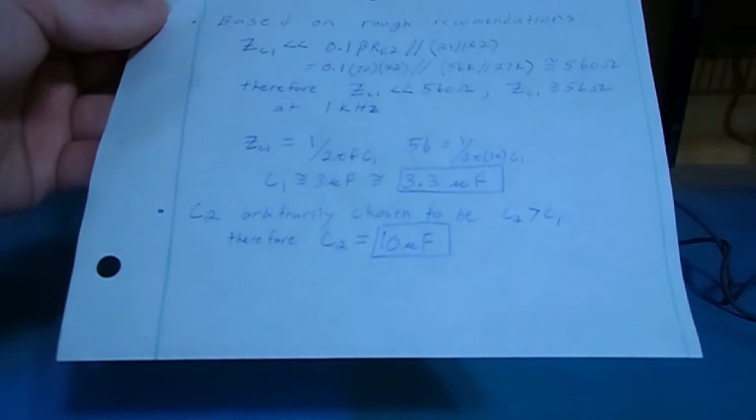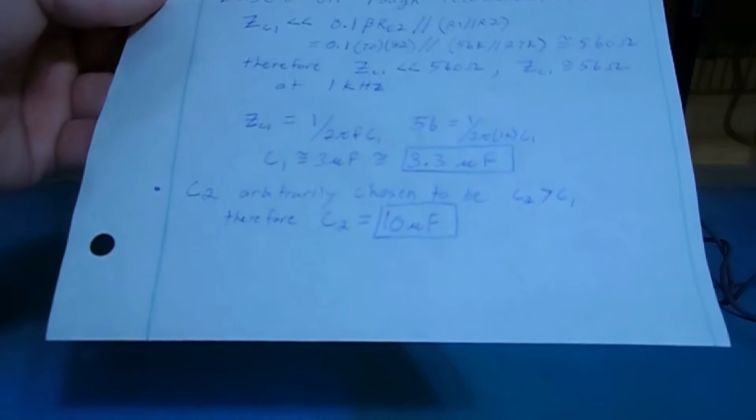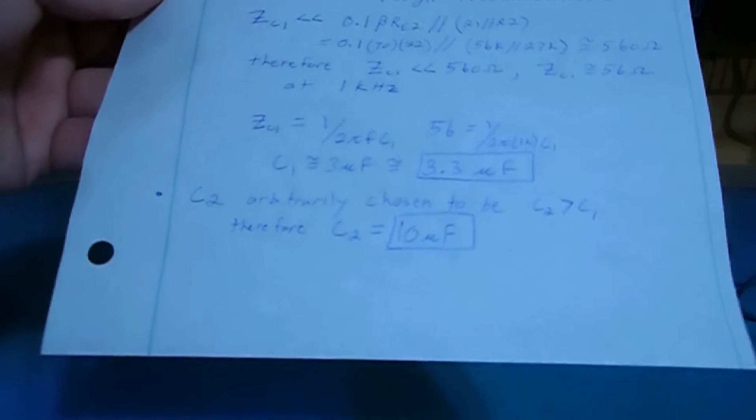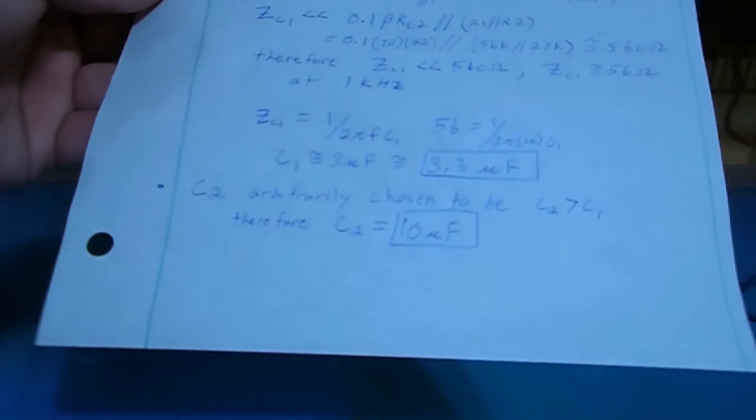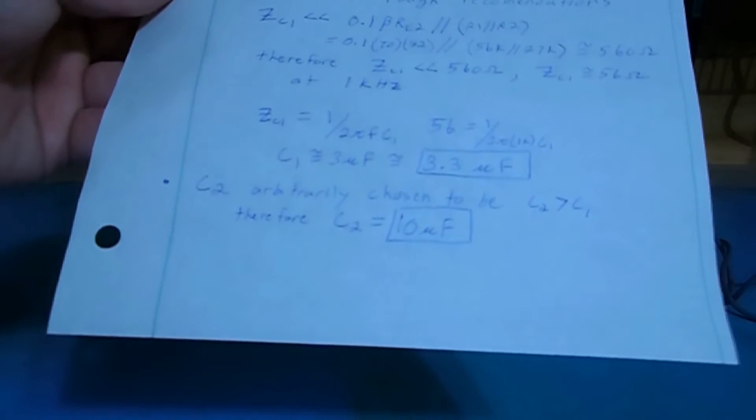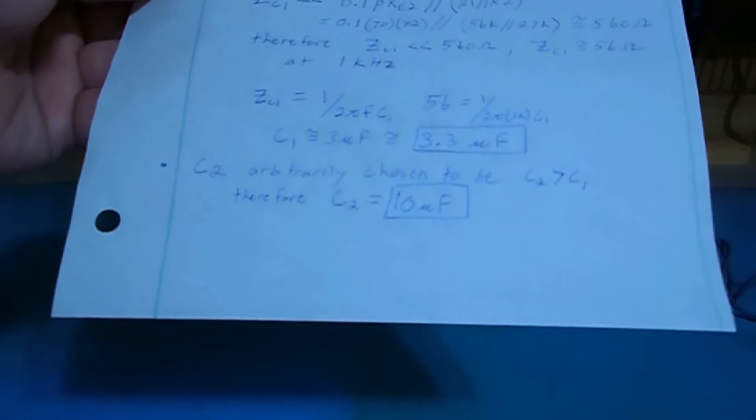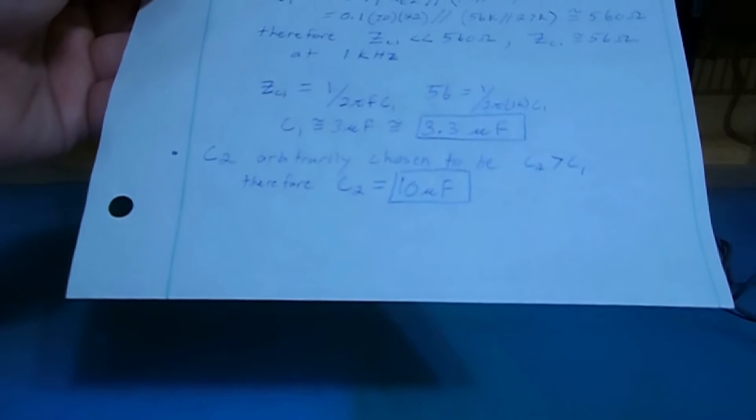The reason we calculate C2 to be just bigger than C1 is because C1 actually forms a high-pass filter on the input of this amplifier, and if C2 were just chosen to be the same value, or even just a little bit bigger, then C2 would contribute as another high-pass filter and start to affect the accuracy at the low end of our frequency band. So by choosing C2 to just be sufficiently bigger than C1, we can get reasonable performance over our entire frequency band of interest.